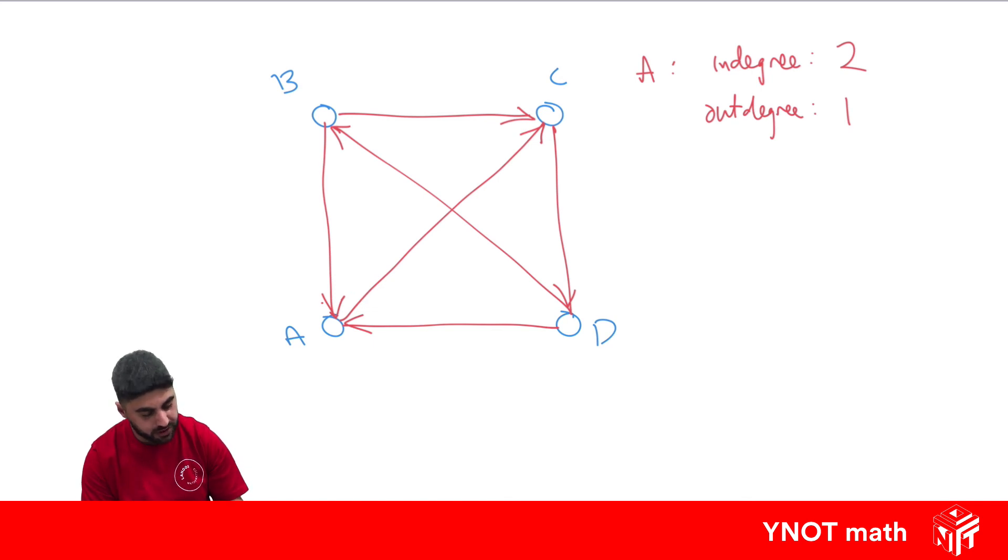If you did the same for the others, B has an in-degree of 1 and an out-degree of 2. C would have an in-degree of 2 and an out-degree of 1. And D would have an in-degree of 1 and an out-degree of 2. This is only going to happen for directed networks.